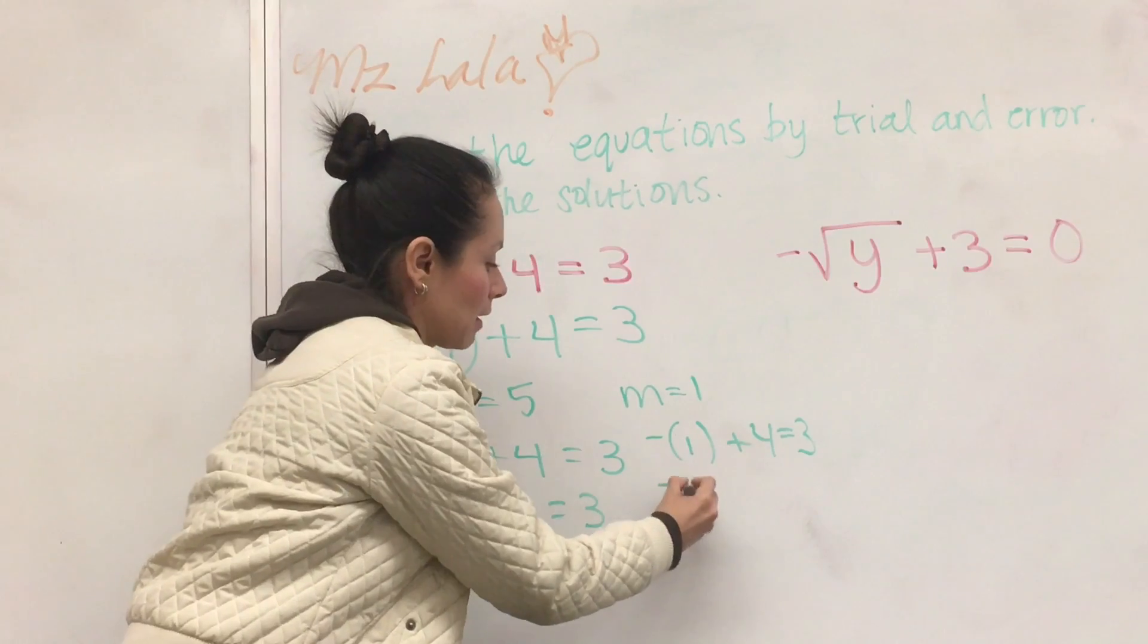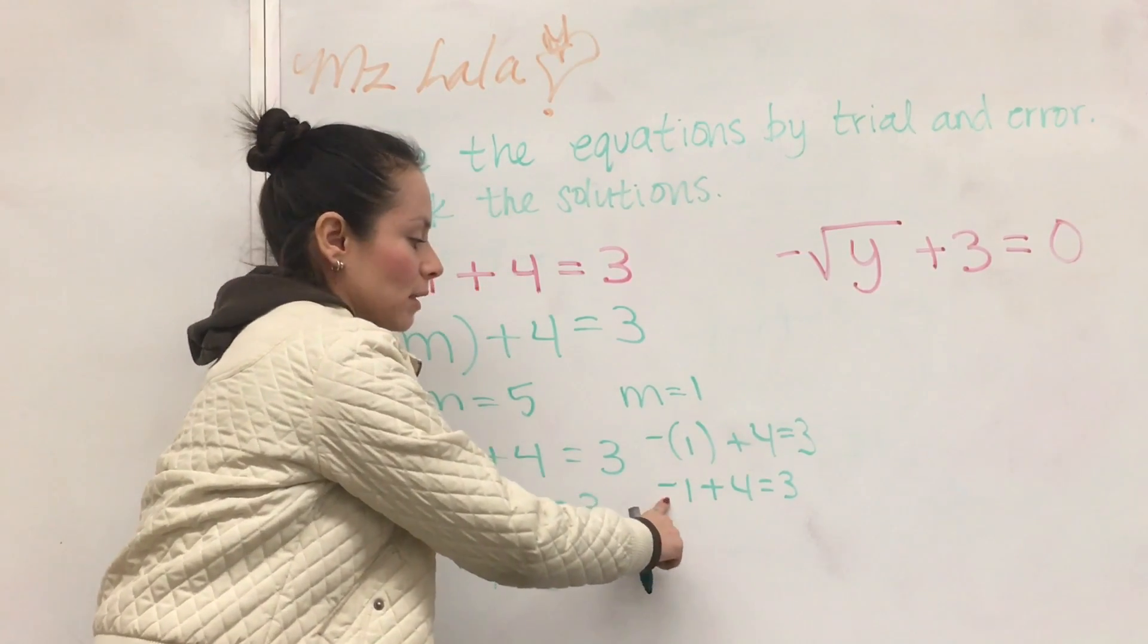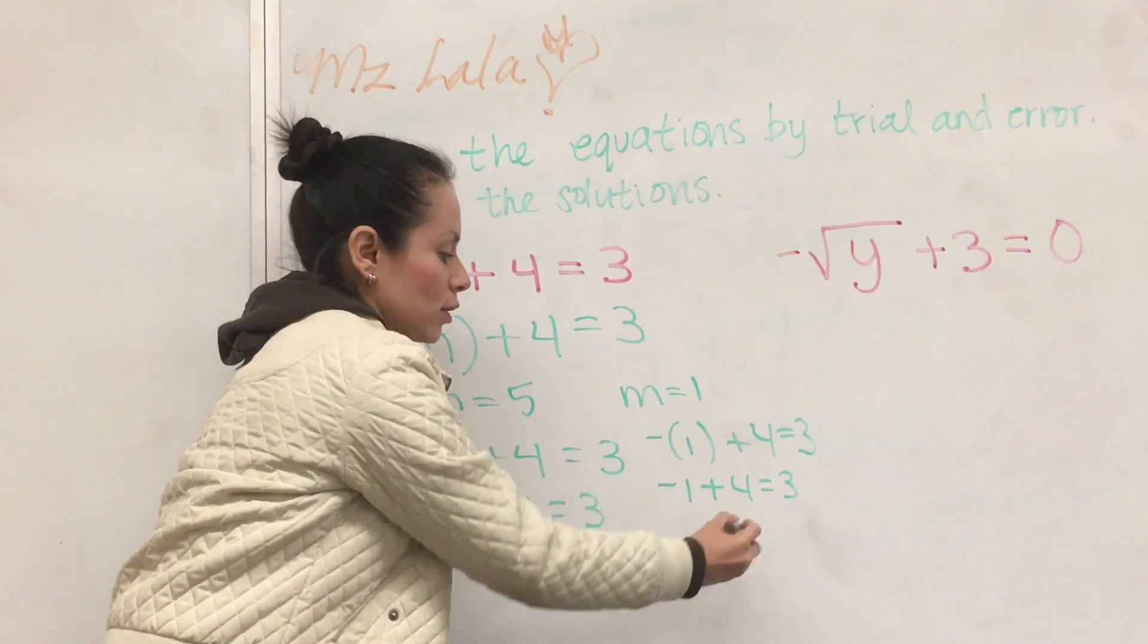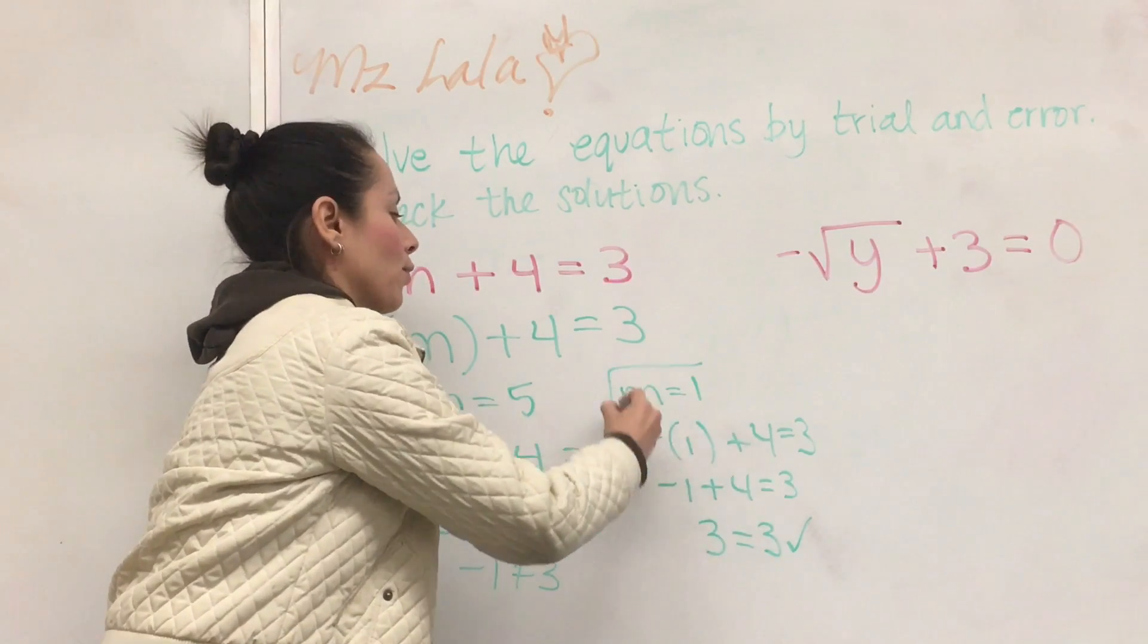The opposite of 1, negative 1 plus 4. Does that equal 3? 1 to the left, or 4 to the right? Positive 3. Yes. And 3 does equal 3.